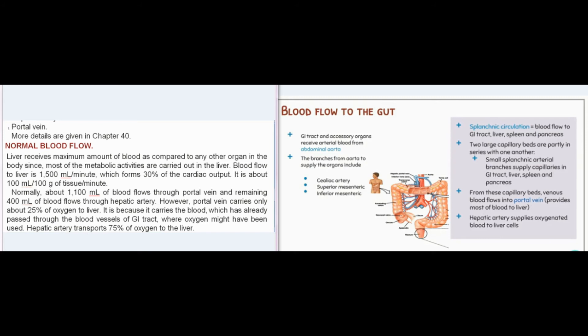Normally, about 1100 ml of blood flows through the portal vein and the remaining 400 ml flows through the hepatic artery. However, the portal vein carries only about 25% of oxygen to the liver, because it carries blood which has already passed through the blood vessels of the GI tract, where oxygen may have been used. The hepatic artery transports 75% of oxygen to the liver.